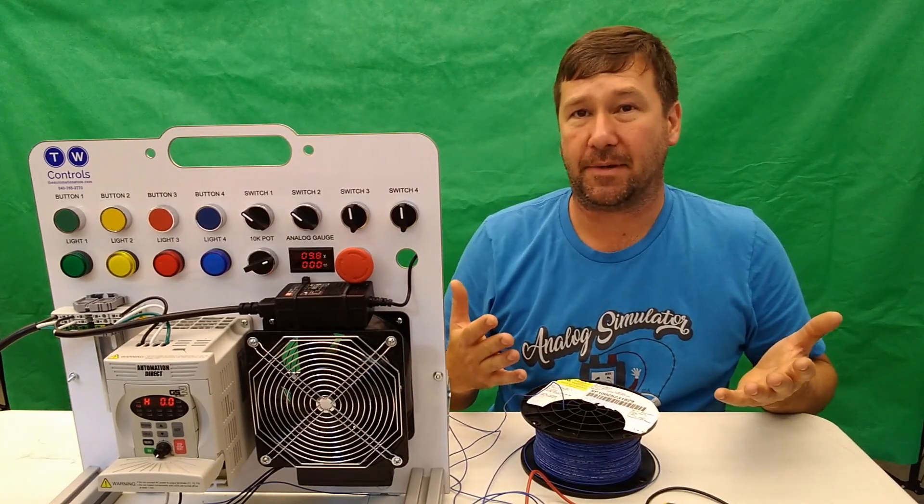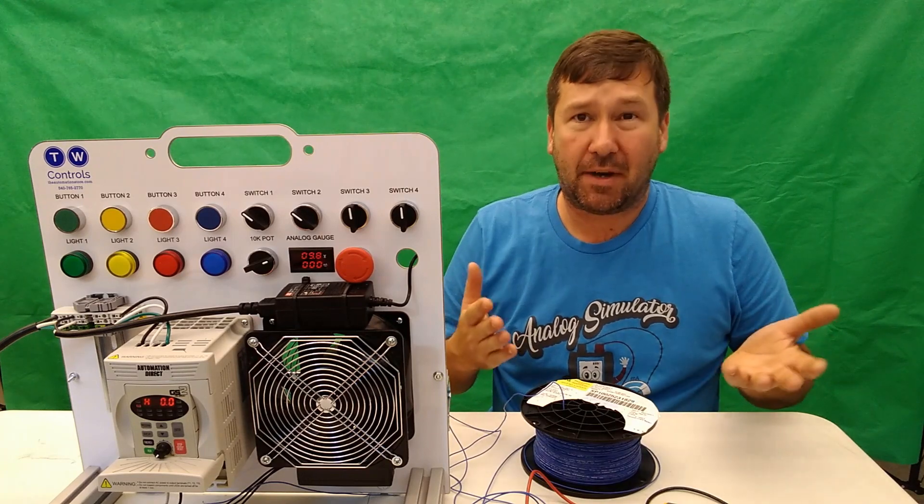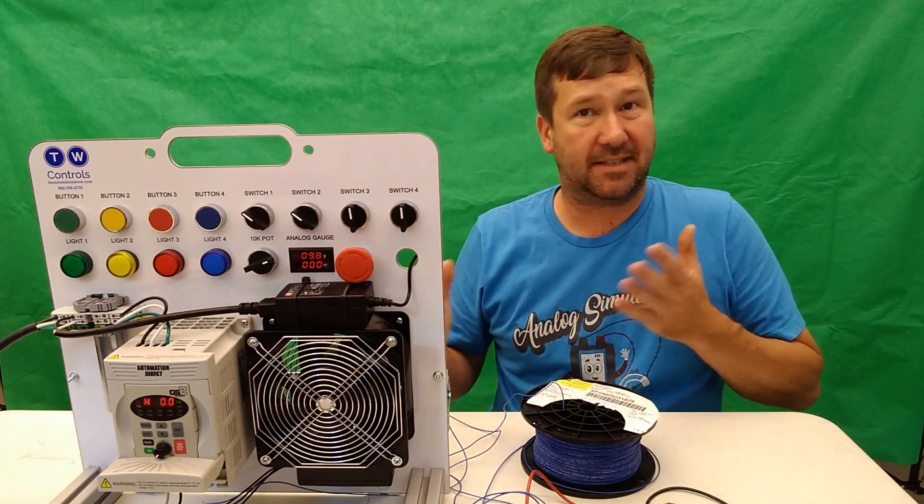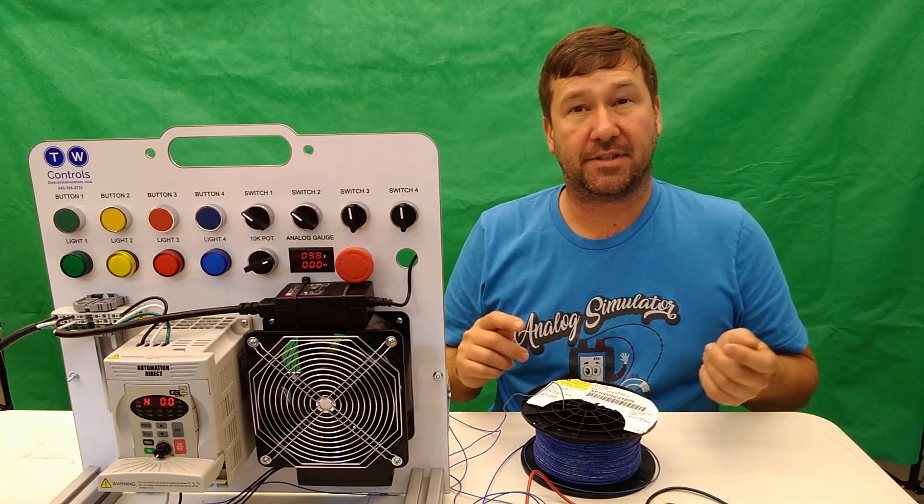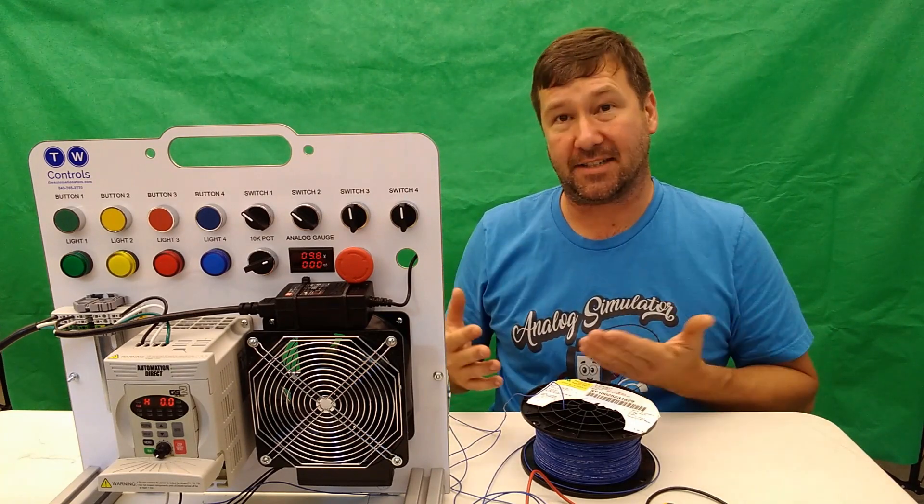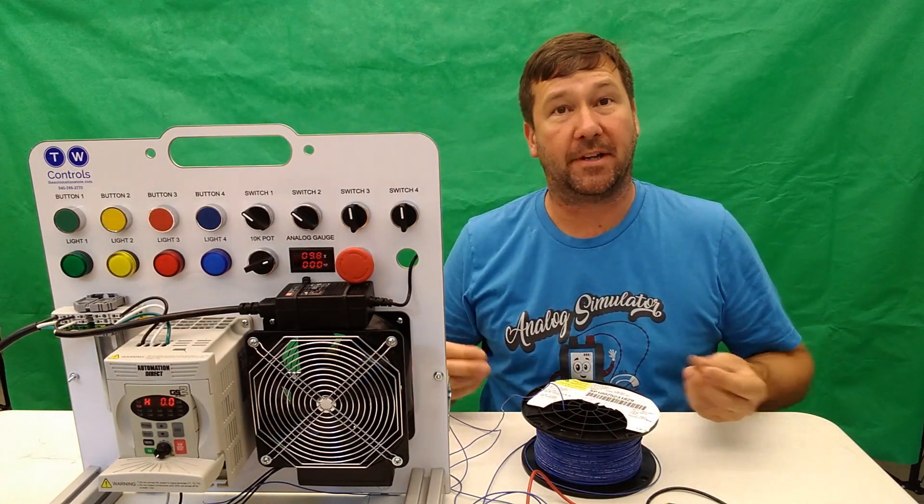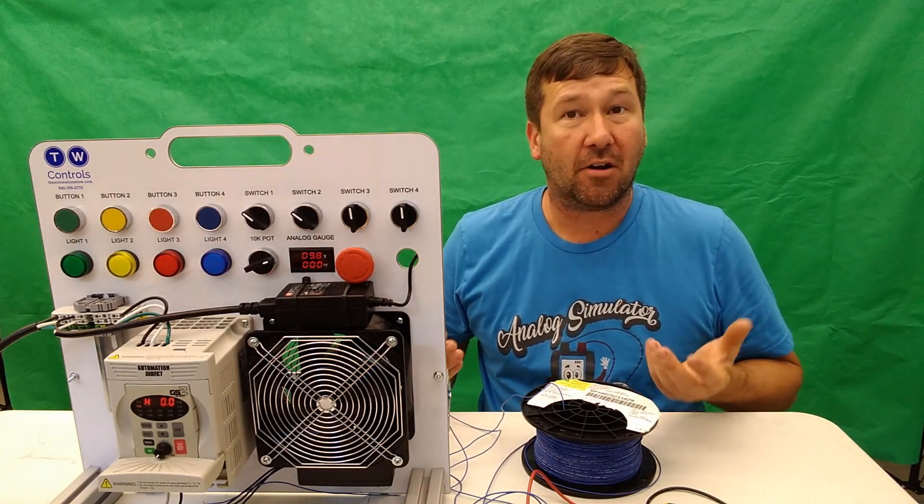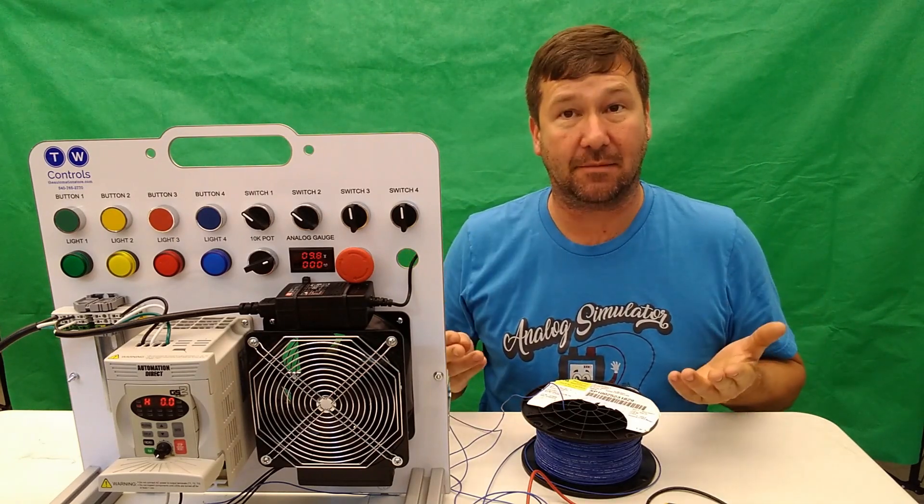Now in a control cabinet where components are really close together, this isn't much of an issue. And that's why you'll see drive speed commands and various internal components be voltage signals. But you'll almost never see a voltage signal actually exit a control cabinet. For signals exiting the control cabinet, where the distance can be longer and the environment can be more harsh, we need a different type of measurement, and that's going to be amps.